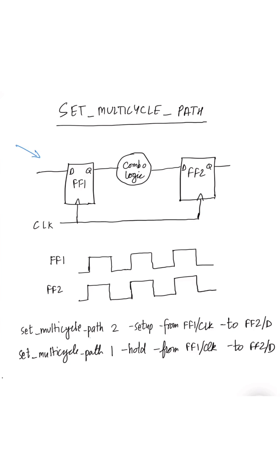In most general cases, if data is launched by flip-flop one on this clock edge, it will be captured after one cycle by flip-flop two on this clock edge. So this will be a single cycle path and setup timing check will be done on this clock edge at flip-flop two.